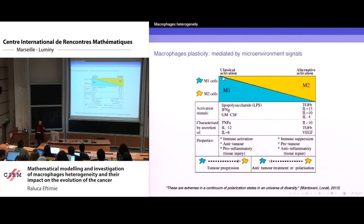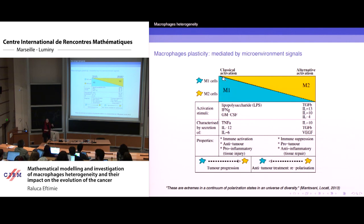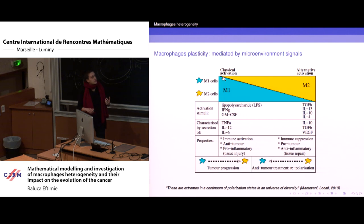The problem is that you also have the second type, the M2 cells, the alternatively activated cells. They're activated by TGF-beta, IL-4, interleukin-10, and so on. They secrete TGF-beta, VEGF. Their role is to suppress the immune system — they have anti-inflammatory properties and they help tumor growth.